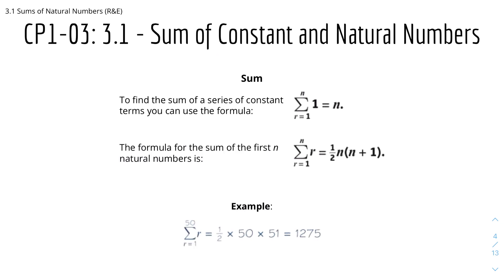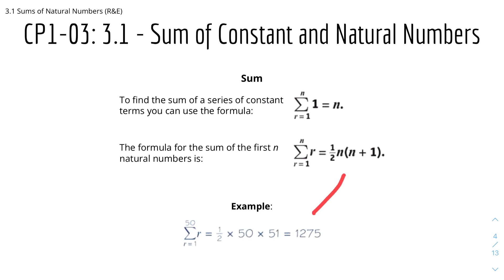Now we have the sum of constant and natural numbers. To find the sum of a series of constant terms, you can use the formula: the sum of 1 from r equals 1 to n equals n. And the formula for the sum of the first n natural numbers is: the sum of r from r equals 1 to n equals ½n(n+1). For example, the sum of r from r=1 to r=50 equals 1 + 2 + … + 50. Using the formula ½n(n+1), we get ½(50)(51) = 1275.